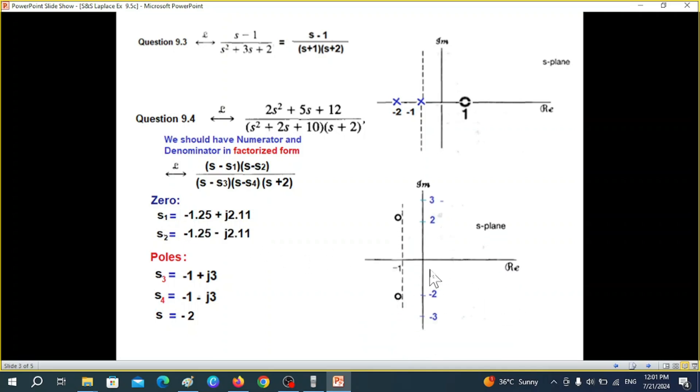So the zero you can see is minus 1.25 and then on the imaginary axis it is plus j2.1. This is j2 so slightly up 2.1 and minus 2.1, so the zeros we have plotted and now we'll plot the poles.